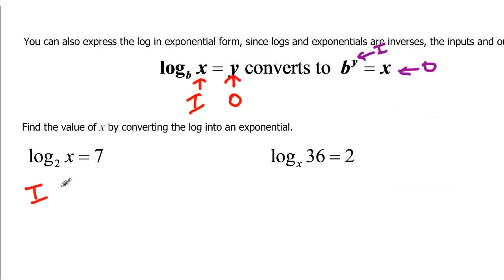The input here is x, and the output here is 7. So when I go to do it in the other form, in the exponential form, my input is going to be 7, and my output is going to be x.